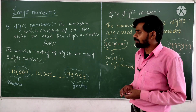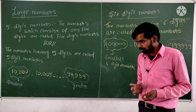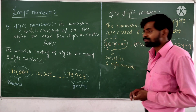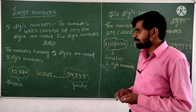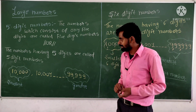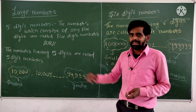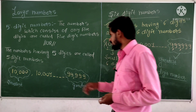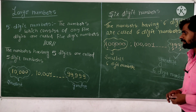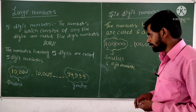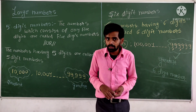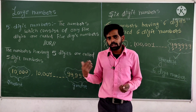We have already learned how to make the smallest number and the greatest number. The smallest five digit number is 10,000. This 10,000 consists of four zeros and a one at the highest place, which is the ten-thousands place. And the largest five digit number is 99,999, which is our greatest five digit number.